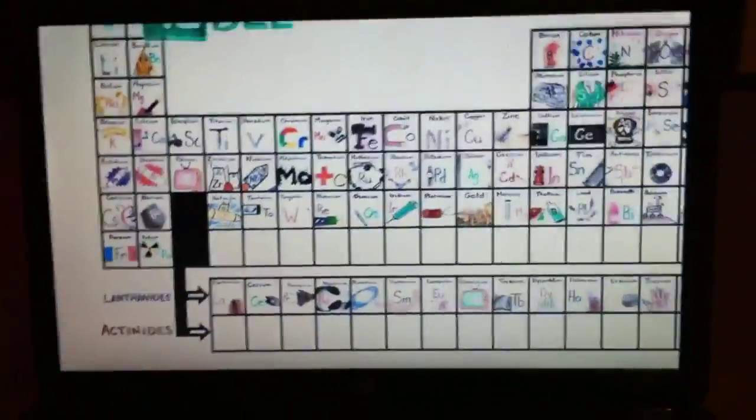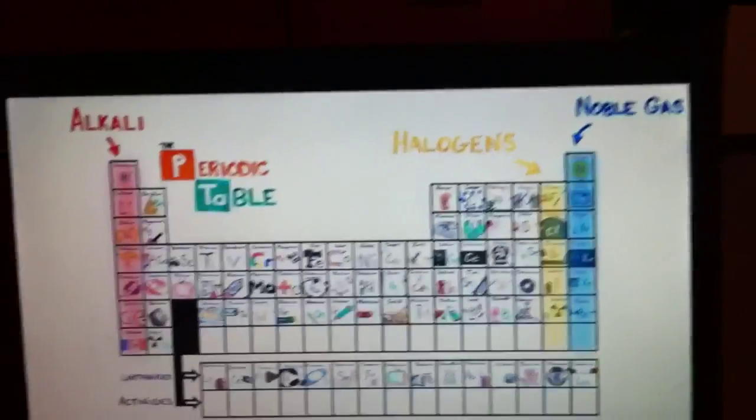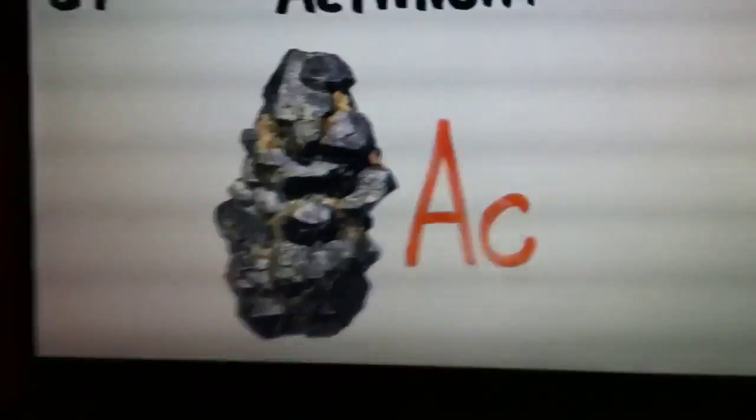This is the periodic table, noble gas is stable, halogens and alkali react aggressively. Each period we'll see new outer shells with electrons are added moving to the right.